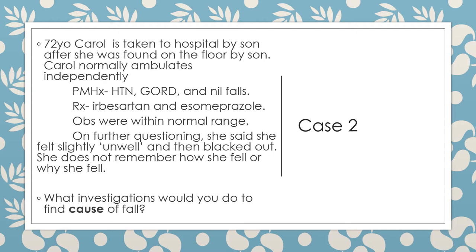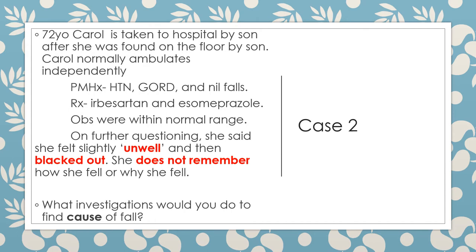Moving on to case two. 72-year-old Carol is taken to hospital by her son after she was found on the floor. Carol normally ambulates independently. Past medical history: hypertension, reflux, no falls. Medications: irbesartan for hypertension and esomeprazole for reflux. Obs are within normal range. On further questioning, she said she felt slightly unwell and then blacked out. She does not remember how or why she fell. This points towards a possible precipitating event such as syncope leading to the fall.